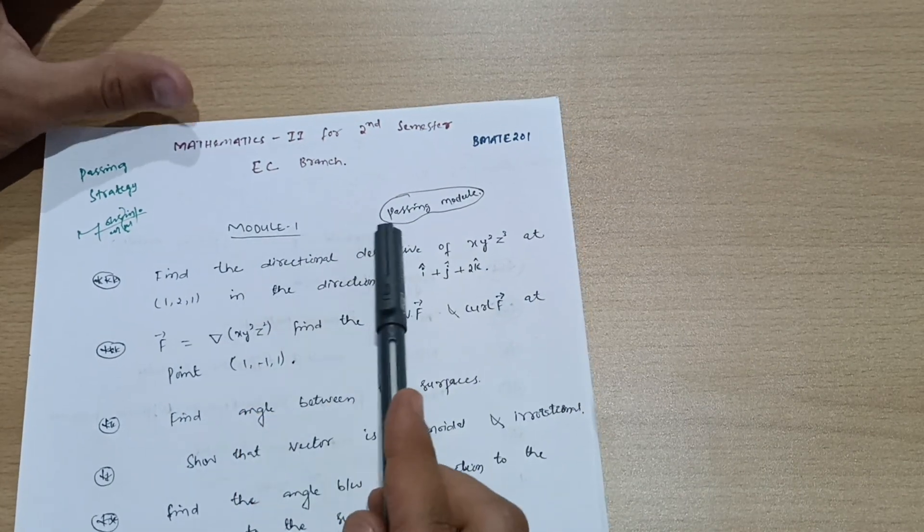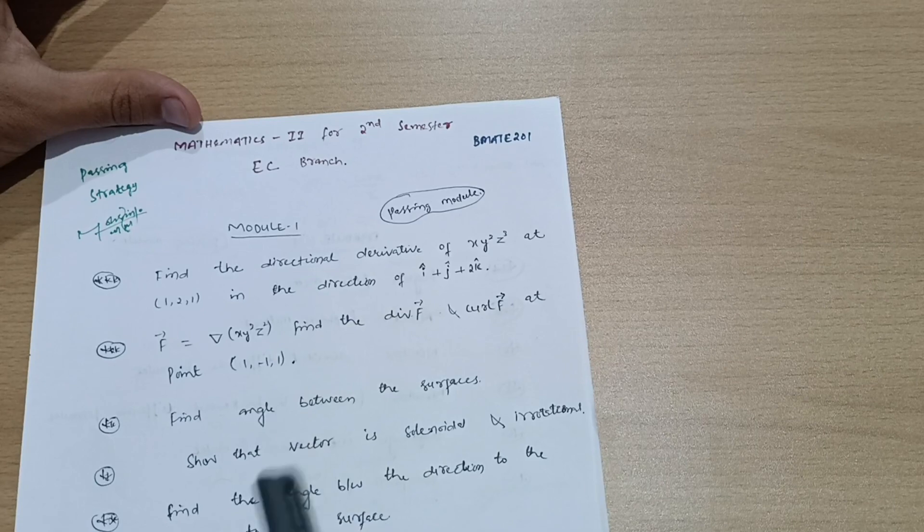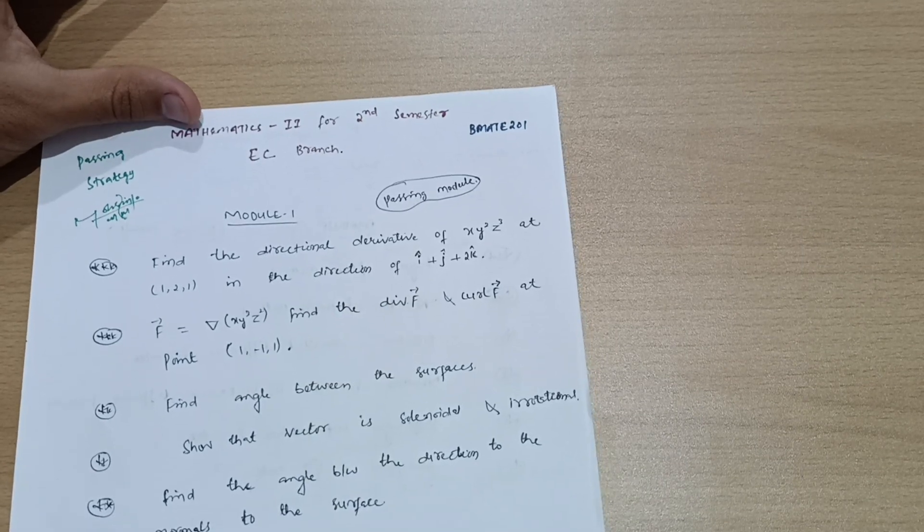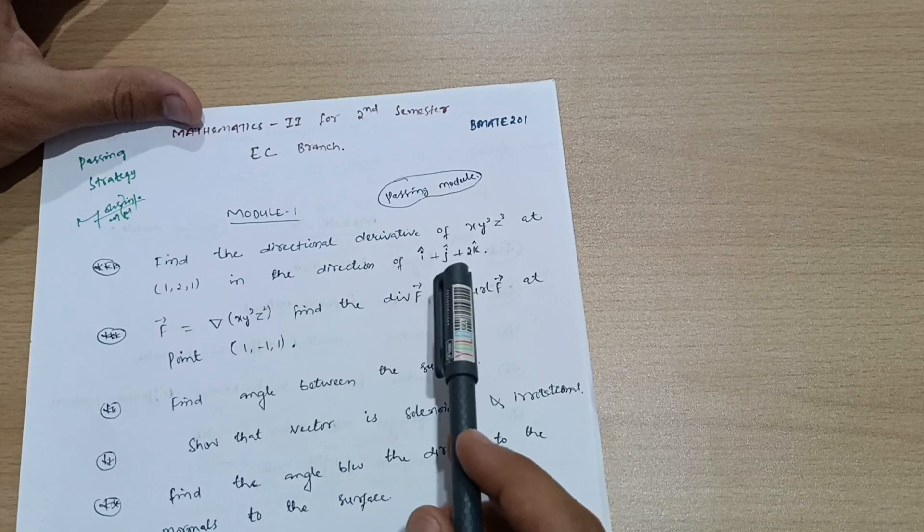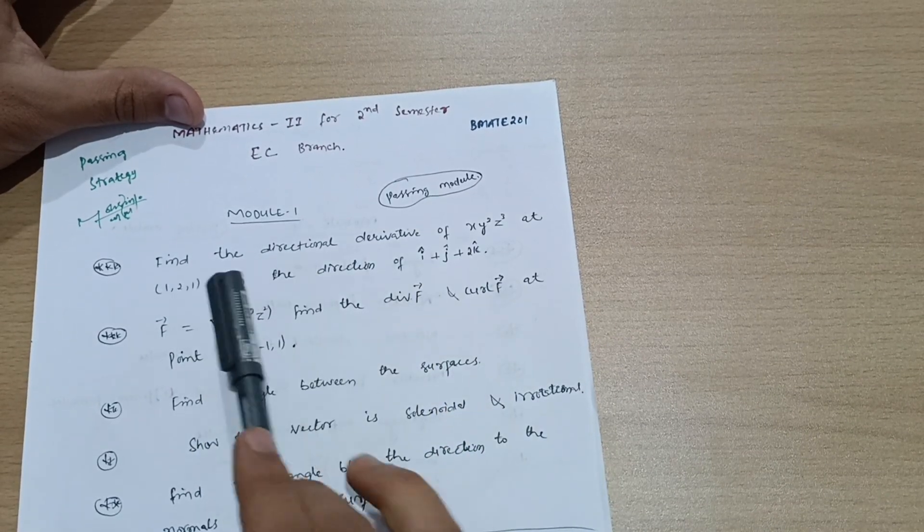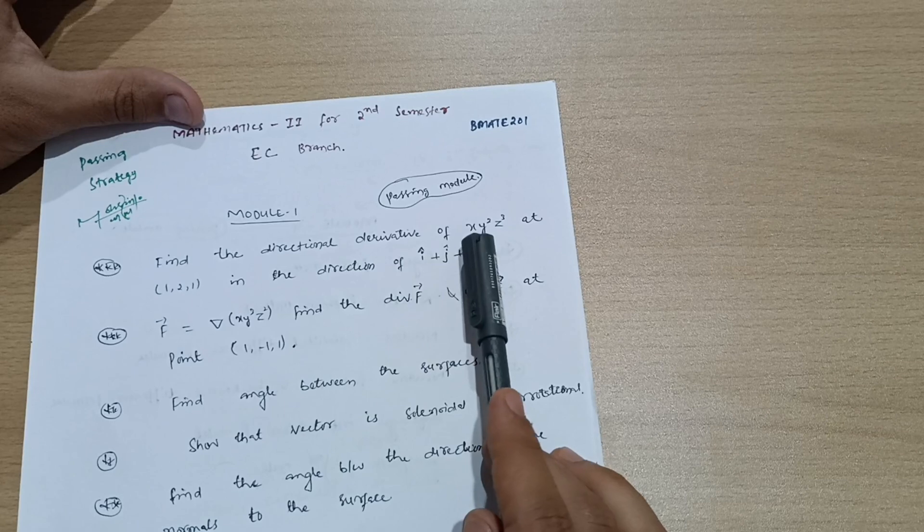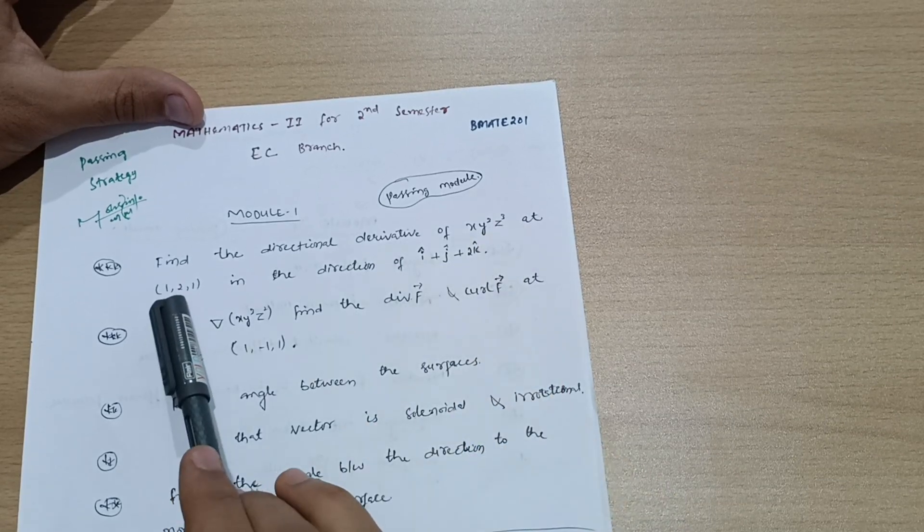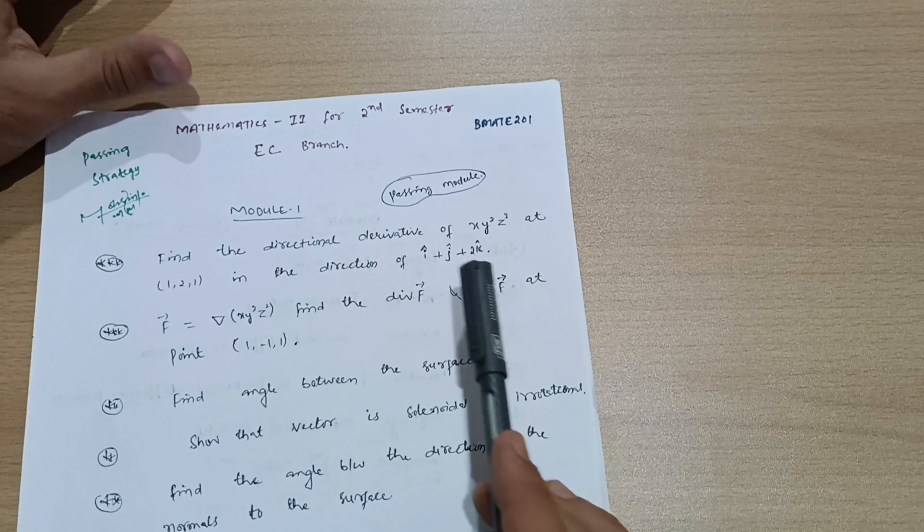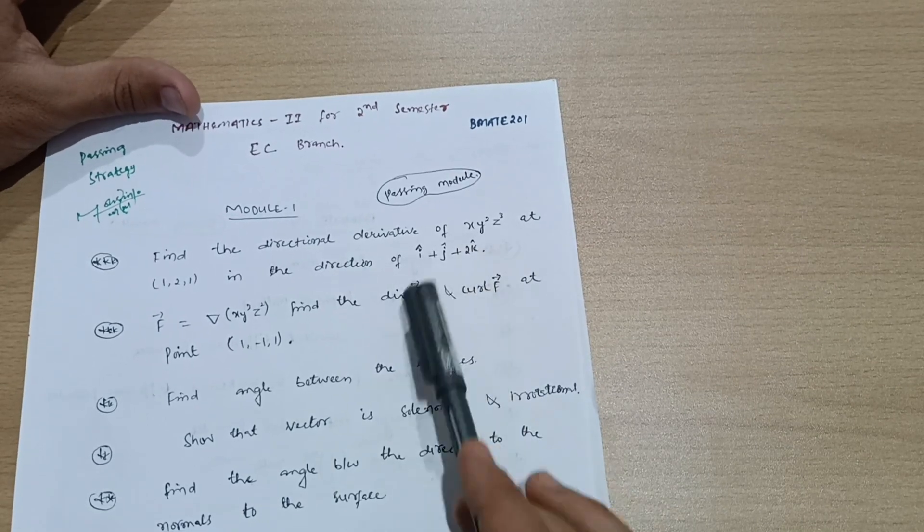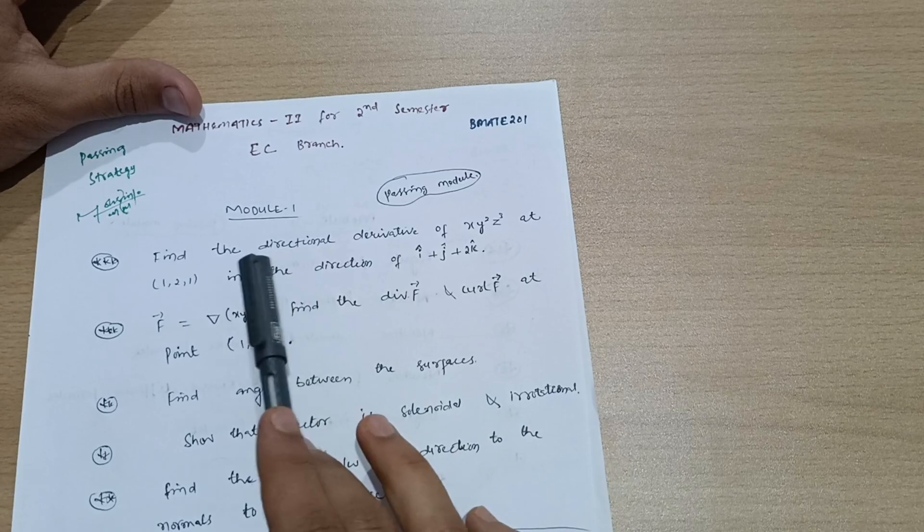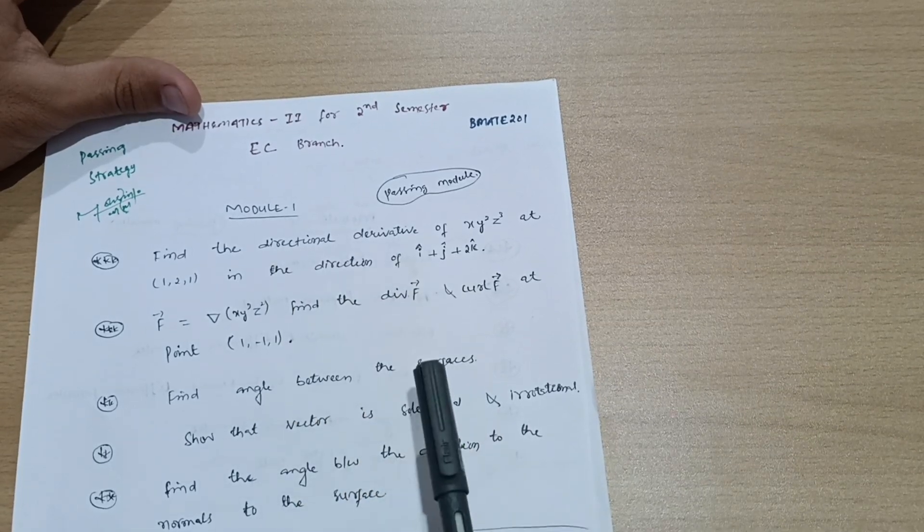First module is the passing module - comparatively easier than module third and module second. You should cover questions like: find the directional derivative of xy²z³ at (1,2,1) in the direction of i cap plus j cap plus 2k cap. I have made separate videos for these type of questions; the link will be in the description box.